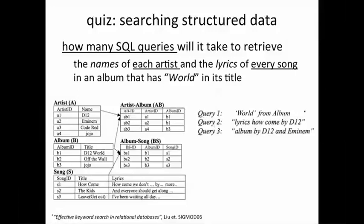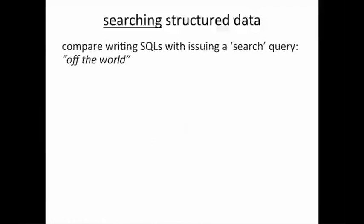Otherwise, each of these will require two separate queries — quite complicated for doing something which is easy to do if one just had a Google-like search on this database. Unfortunately, that is quite difficult to achieve. Imagine if we had a search interface so that we could issue a query like 'off the world,' since we didn't really remember the exact title of the album.